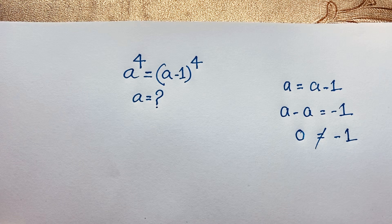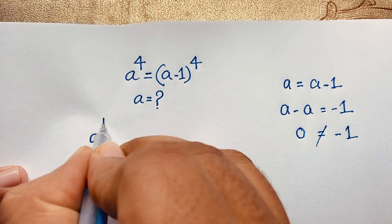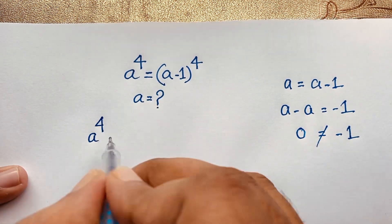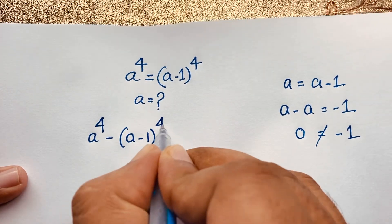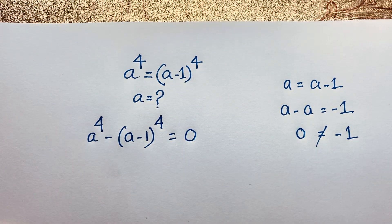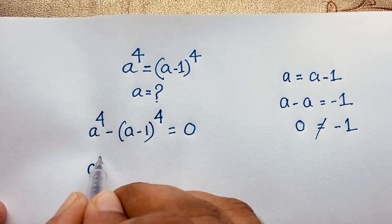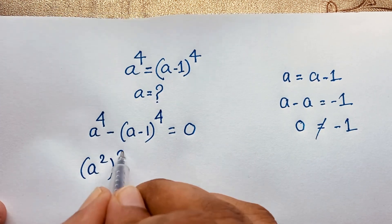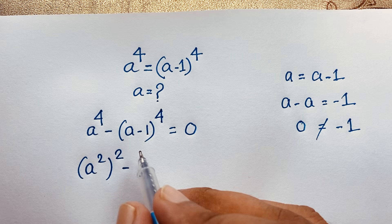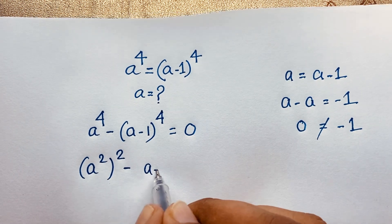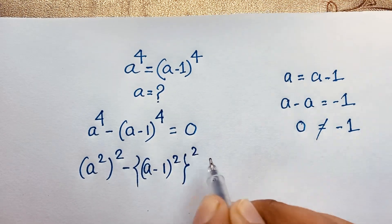So how to solve this interesting maths question? At this moment, we rewrite it as a to the power 4 minus a minus 1, the whole bracket to the power 4, is equal to 0. Now you can rewrite a to the power 4 as a squared, whole to the power 2, and similarly a minus 1 whole squared, whole to the power 2, is equal to 0.